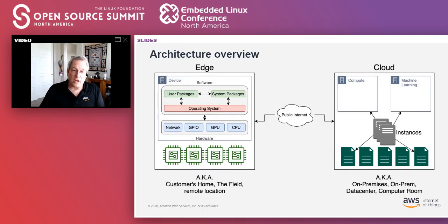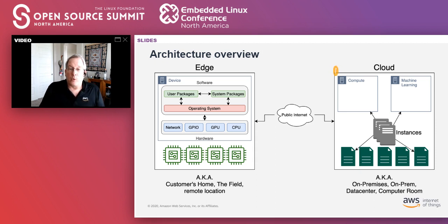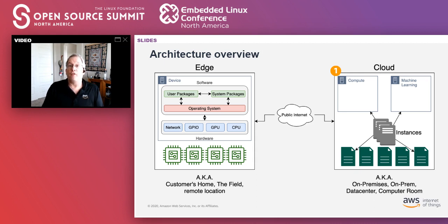Before we jump into edge cases, just want to go over architecture terminology. As a solutions architect in the IoT space at AWS, I use the word cloud a lot. When I talk about cloud as a holistic view, consider this to be either your cloud platform, or if you're not using cloud services, the data center, your on-premises environment — wherever you've got central control and services available 24/7.